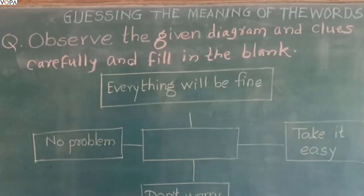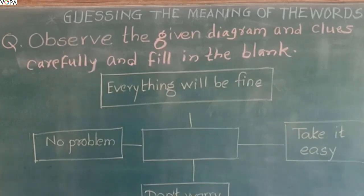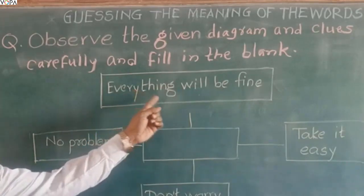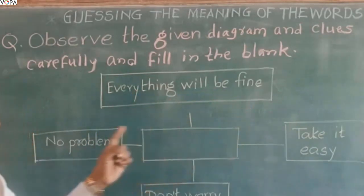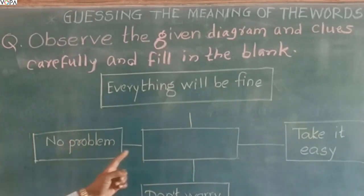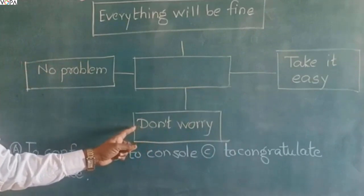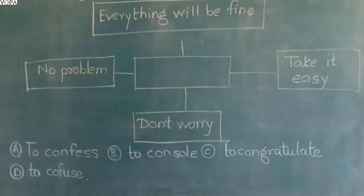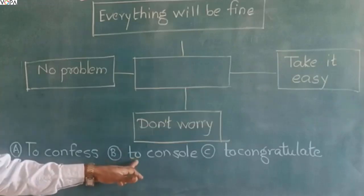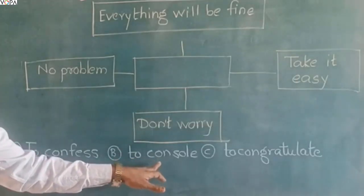Here is an example of the 'guessing the meaning of words' question using a diagram. Observe the given diagram and clues carefully and fill in the blank. The clues are: everything will be fine, no problem, take it easy, and don't worry. Based on these clues, 'to console' is the right answer.